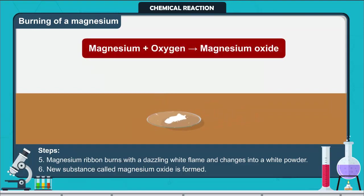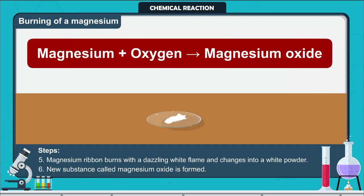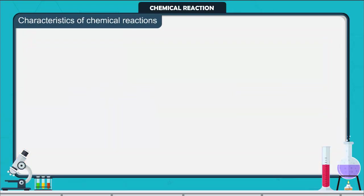It is a state change of magnesium to magnesium oxide. The substances which take part in a chemical reaction are called reactants. The new substances produced as a result of a chemical reaction are called products. The following observations help us to determine whether a chemical reaction has taken place. In other words, these observations are characteristics of chemical reactions.